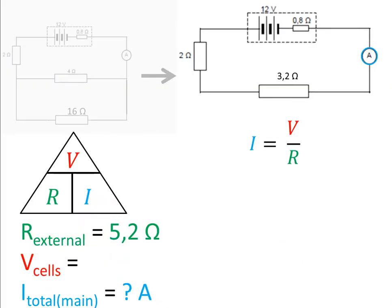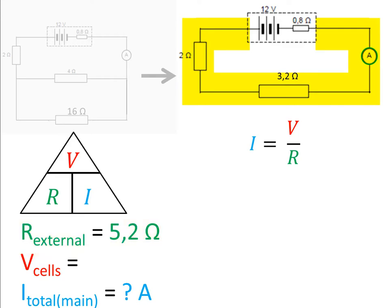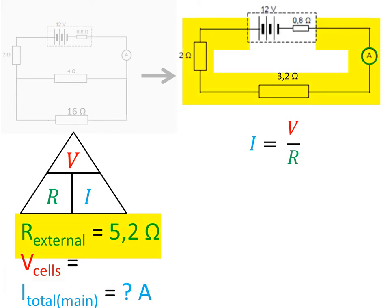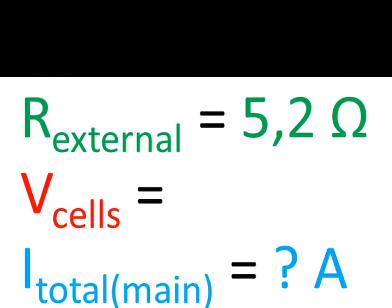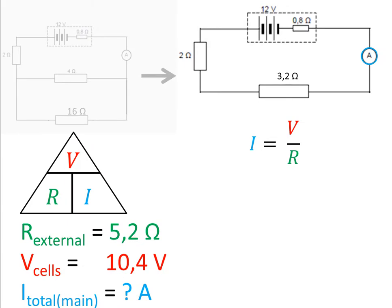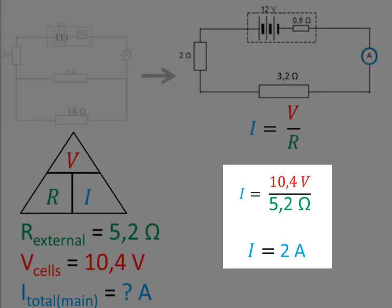Notice that we would get the same answer if we rather viewed the total resistance as being the total external circuit's resistance, which is 5.2 ohms. But then we must be consistent and use the terminal potential difference rather than the EMF. So if R equals 5.2 ohms, we first calculate the terminal potential difference, which we find to be 10.4 volts. Then 10.4 volts divided by 5.2 ohms equals 2 amperes — the same answer.